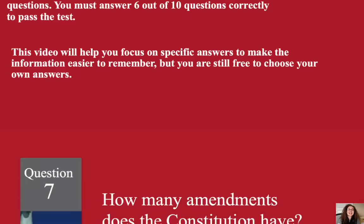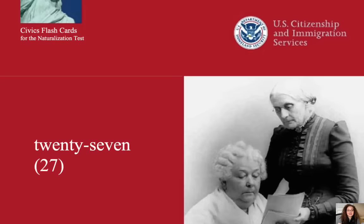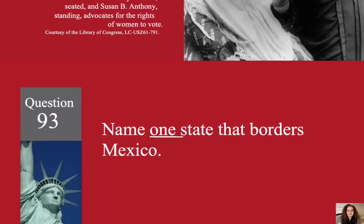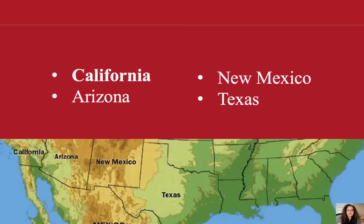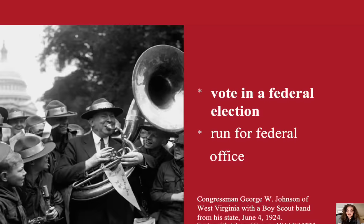How many amendments does the Constitution have? 27. Name one state that borders Mexico. California. Name one right only for United States citizens. Vote in a federal election.